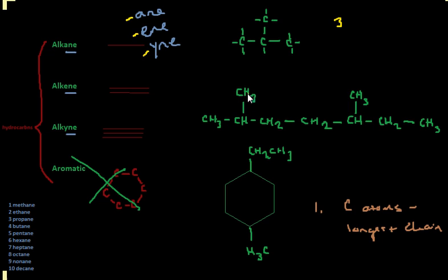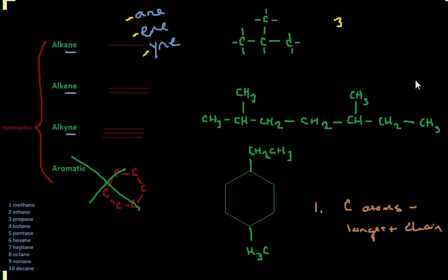For example, we can look at this one — we could count one, two, three, four, five, six, seven, and that would be our longest chain. We also have the same chain on the bottom row going one, two, three, four, five, six, seven. So we might as well look at it that way, because it's just easier to understand a structure if we look at it the simplest way. So we have seven carbon atoms on the longest chain there.